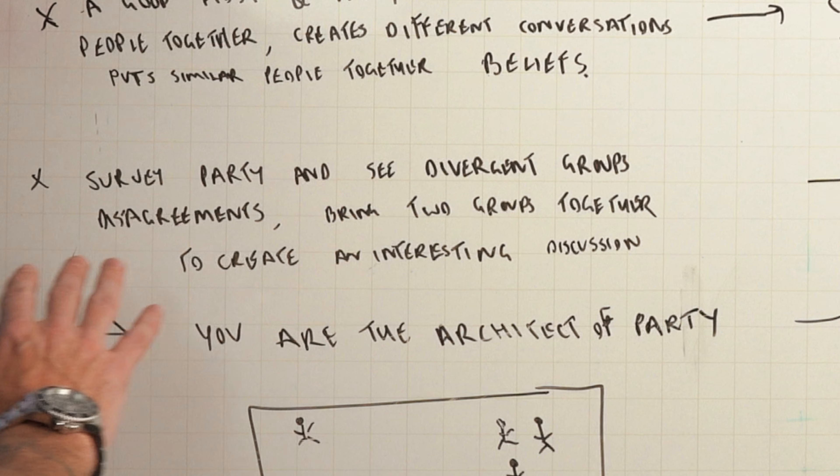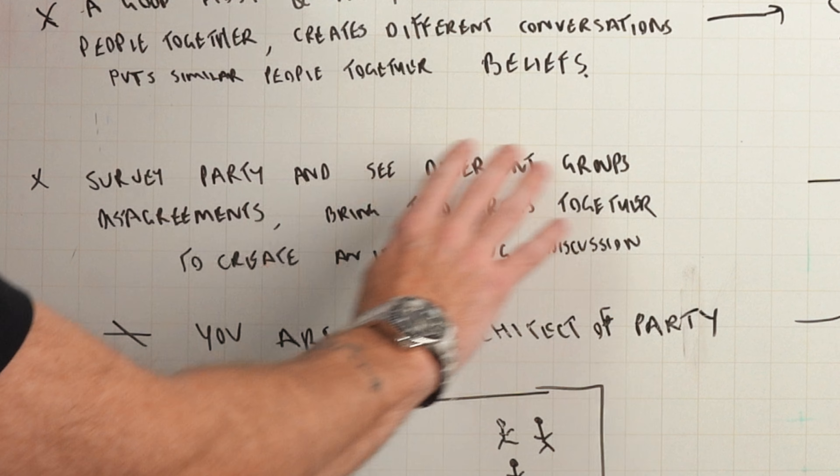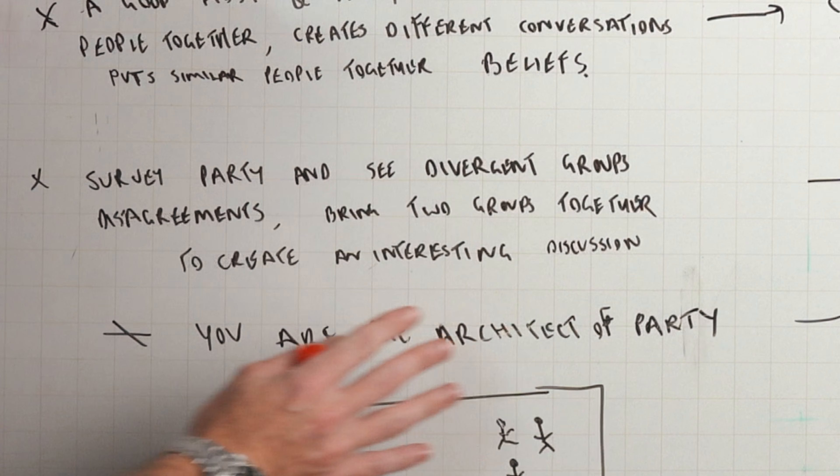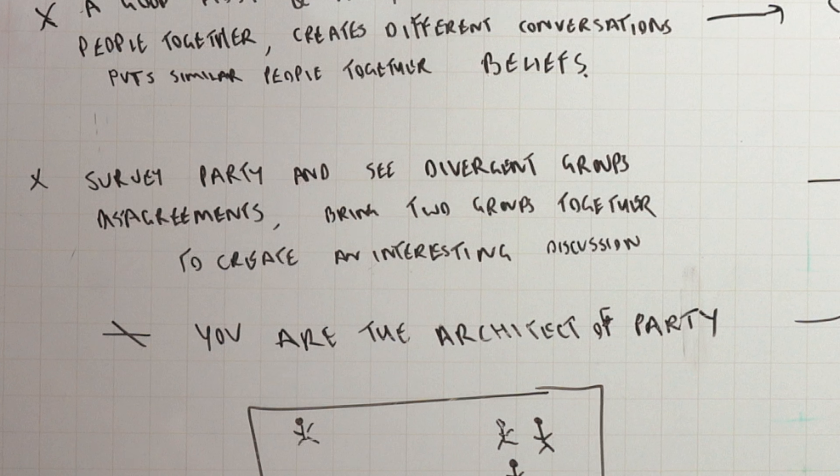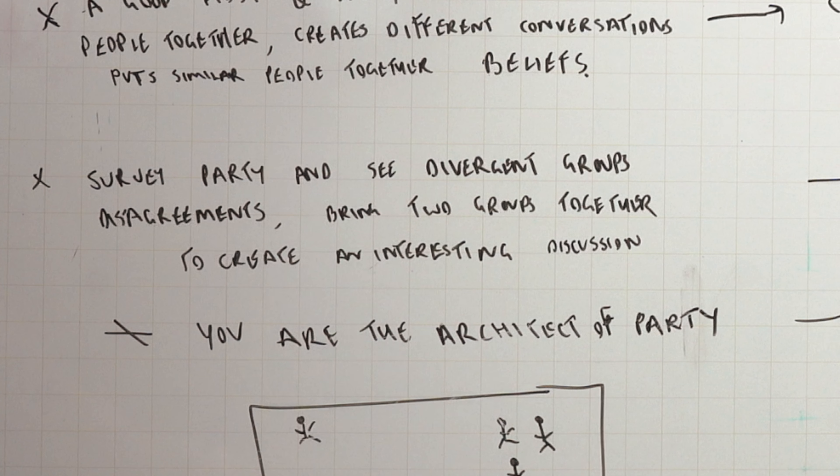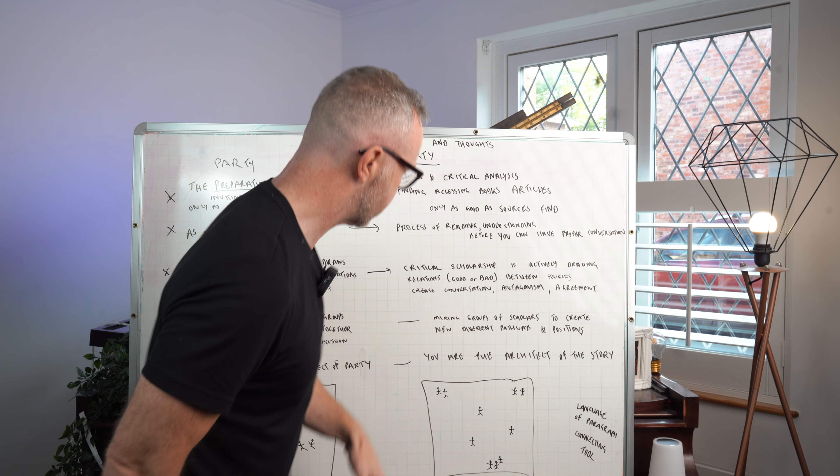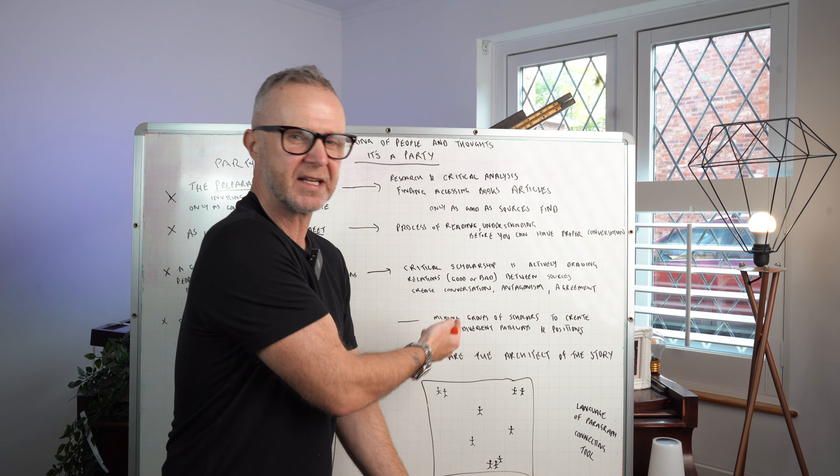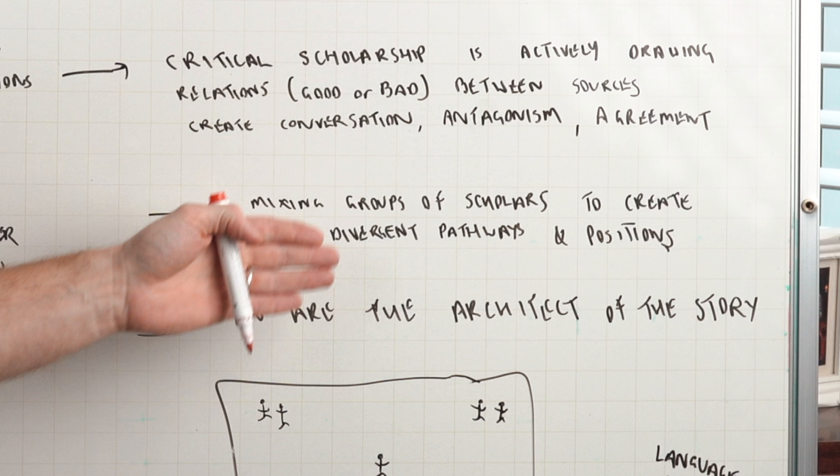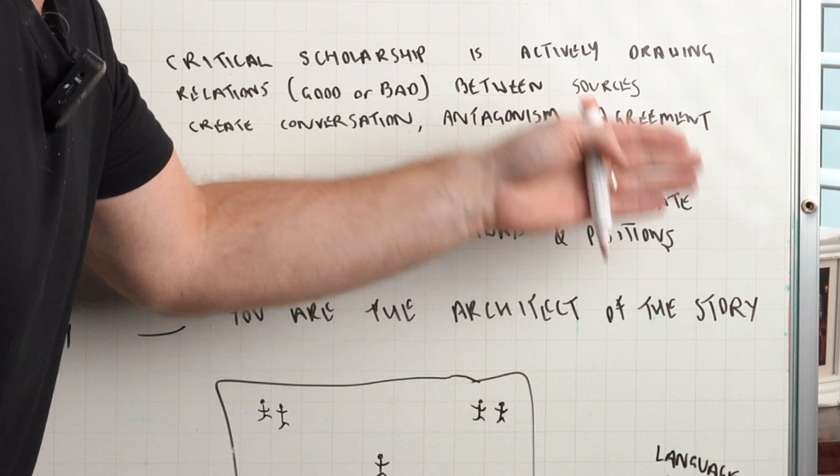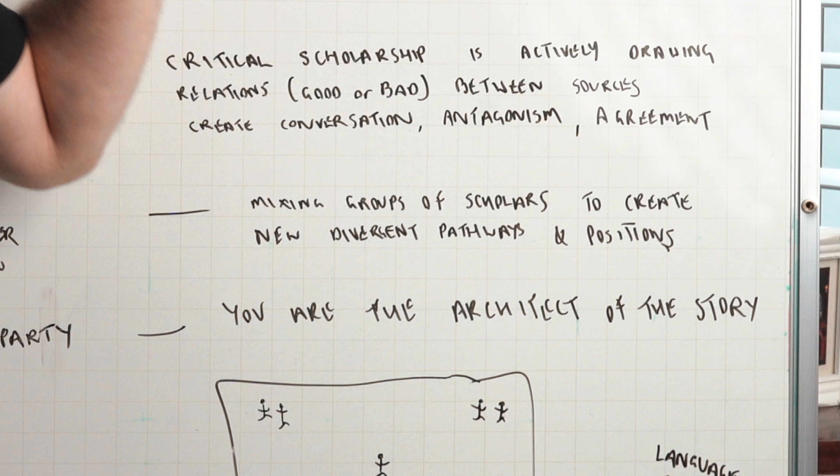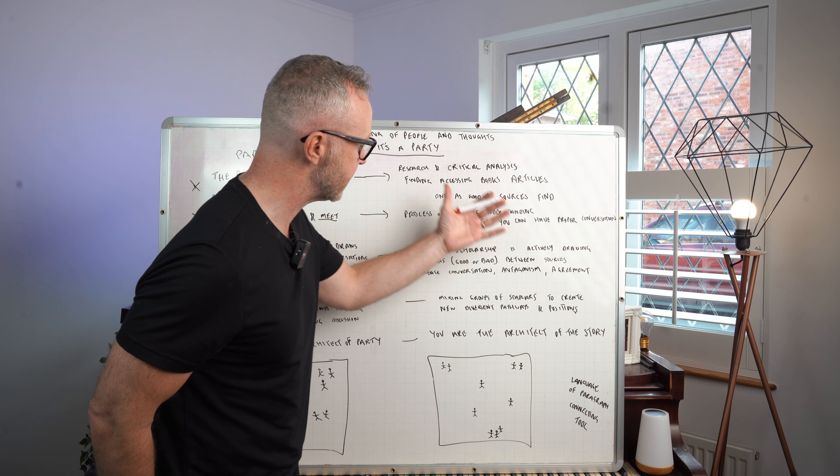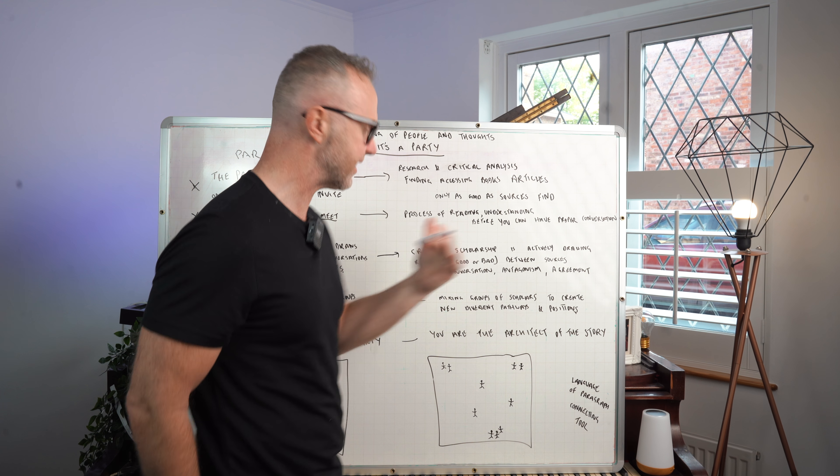Finally, surveying the party, the host might be seeing divergent groups, disagreements occurring, bringing two groups together perhaps to create an interesting discussion. You are the architect of the party. So let's go over to critical analysis. Very similar, you're mixing groups of scholars to create new and divergent pathways and positions across your paragraph. You are the architect of the critical story that you want to tell about what you are trying to answer in the essay.